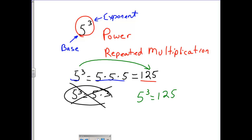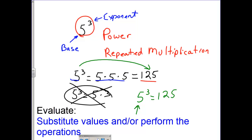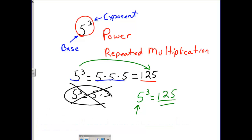If we said evaluate 5 to the third power, that would mean 5 times 5 times 5 equals 125. The answer we're looking for is 125. So evaluate means substitute values and perform the operations to find what it equals.